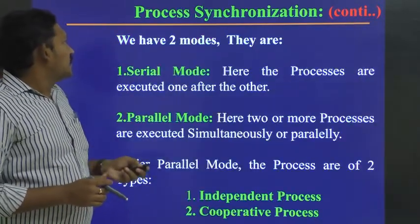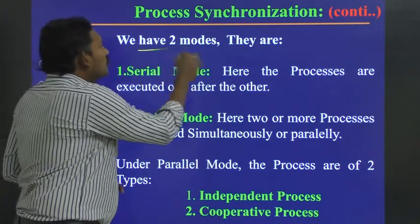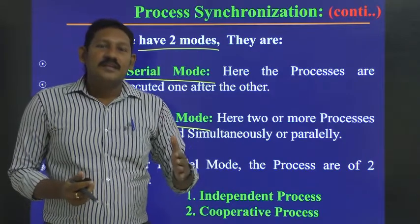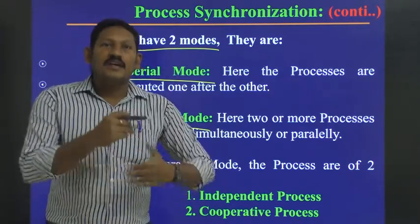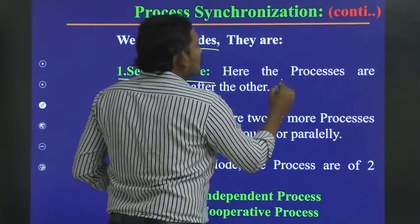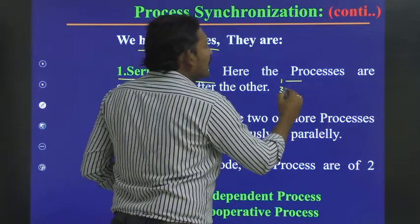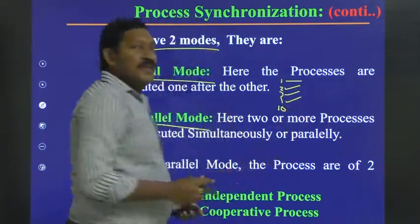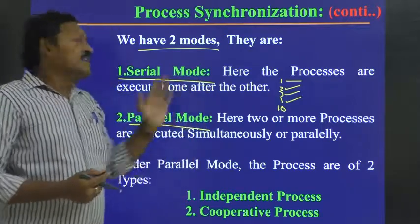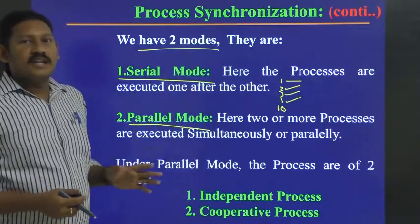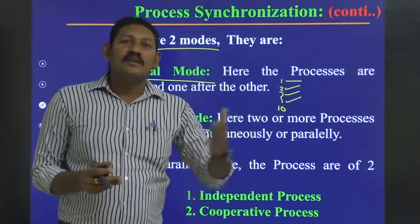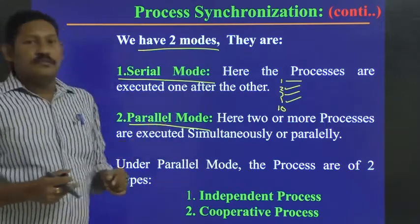Process synchronization operates in two modes: serial mode and parallel mode. Serial mode is the process of executing instructions sequentially, one by one, one after the other. Parallel mode is the process of executing two or more processes simultaneously or in parallel.